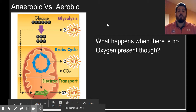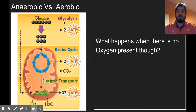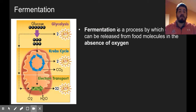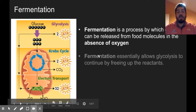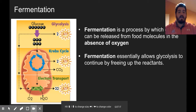Since these organisms can only do glycolysis, life has come up with another pathway just to help glycolysis a little bit. When there's no oxygen present and we're only doing glycolysis, we have what's called fermentation. Fermentation is a process by which energy can be released from food molecules in the absence of oxygen. Fermentation essentially allows glycolysis to continue — that's the most important piece right there.